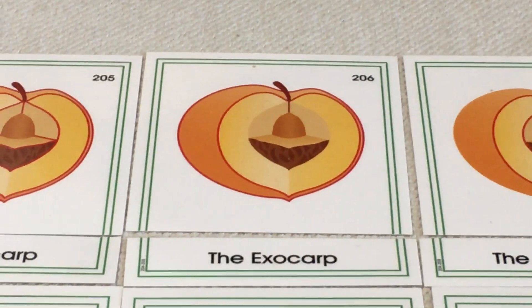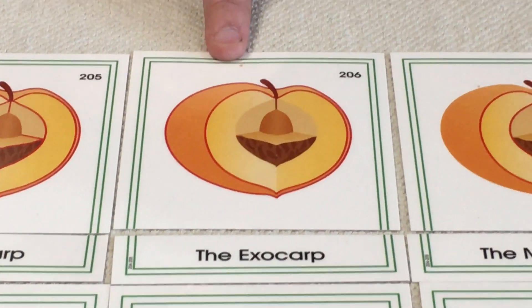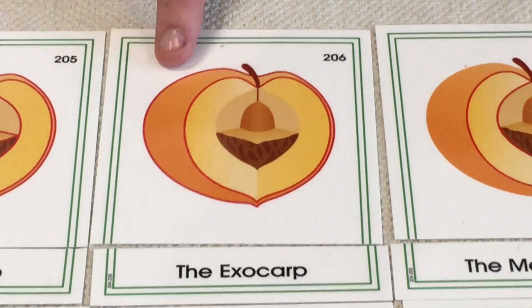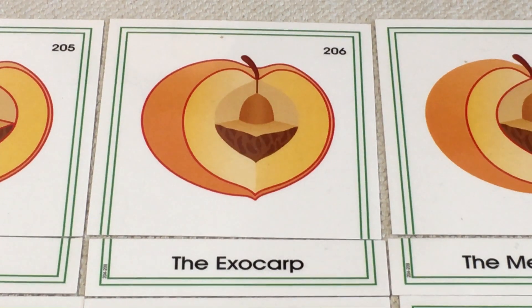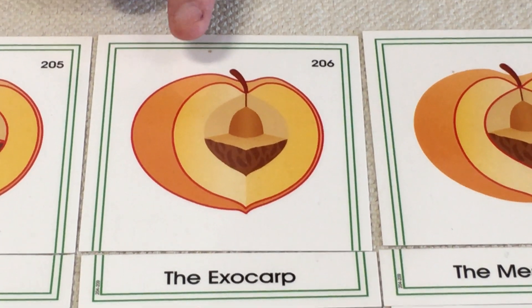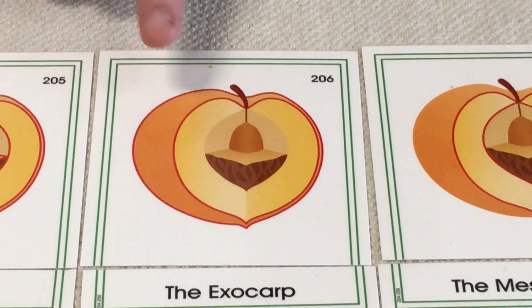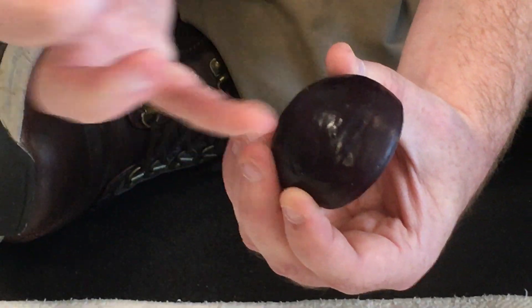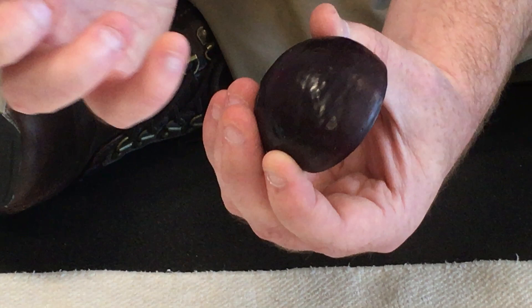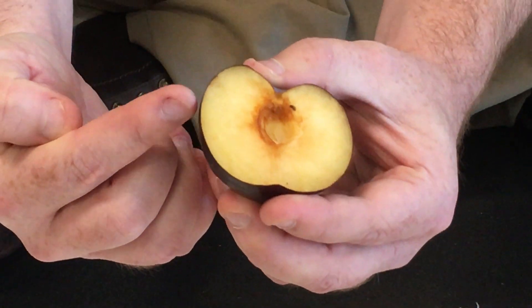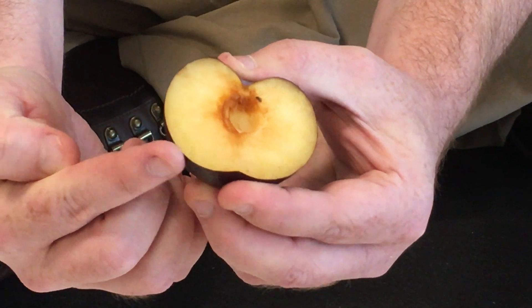Now we start going into the different layers of the fruit. The first layer — the outside, the skin of the fruit — is called the exocarp. Say that with me: exocarp. Good. The skin on the outside. On this plum, the exocarp is dark and smooth. It helps keep moisture in the fruit, making it very juicy. You can see the exocarp is very thin, and it goes around the outside of the fruit.